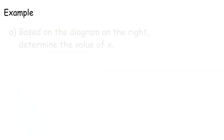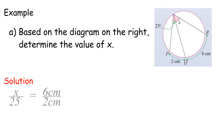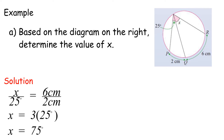Example A: Based on the diagram on the right, determine the value of X. X over 25 degrees equals 6 centimeters over 2 centimeters. X equals 3 times 25 degrees. X equals 75 degrees.